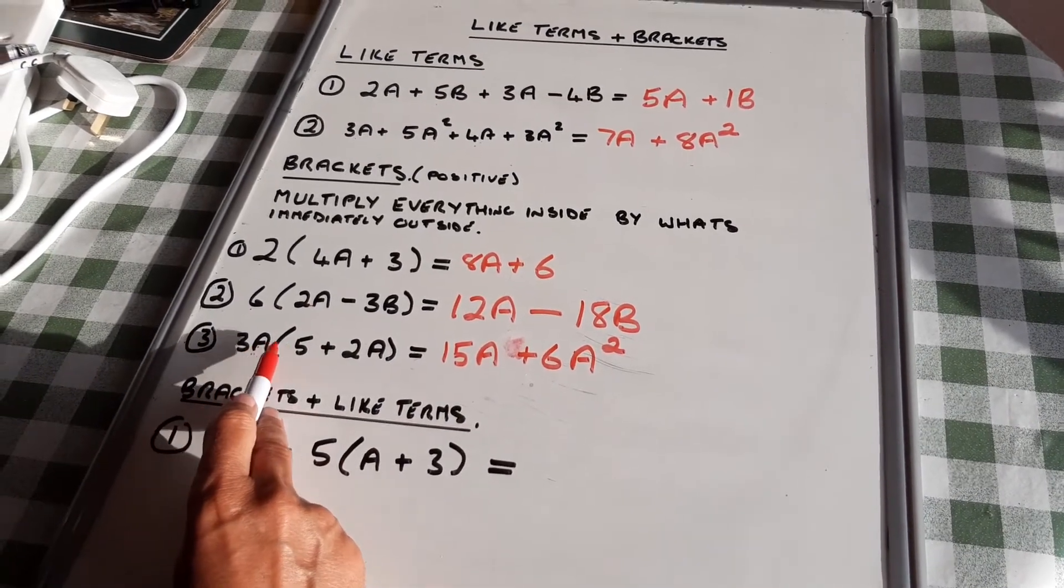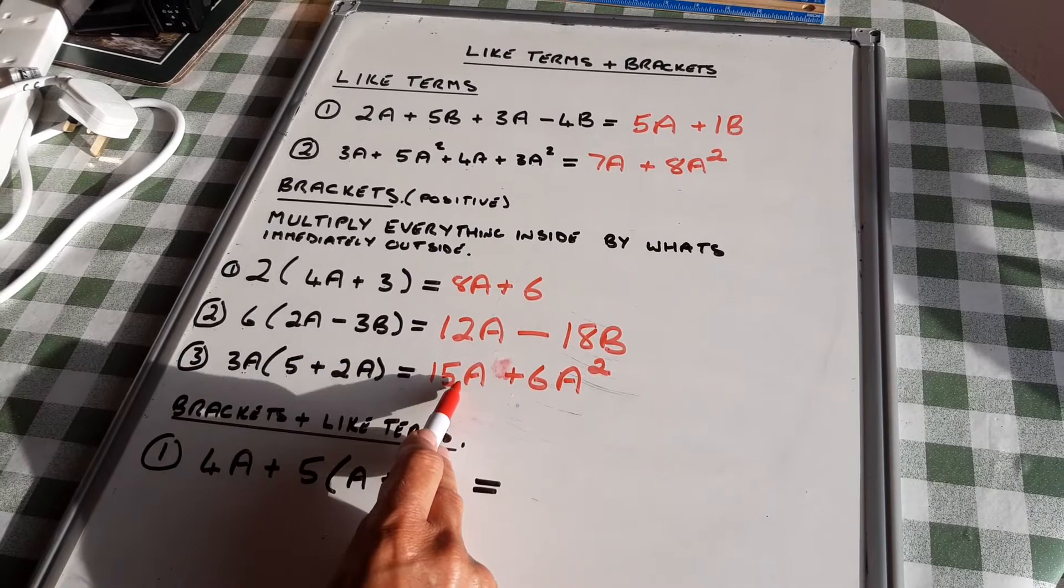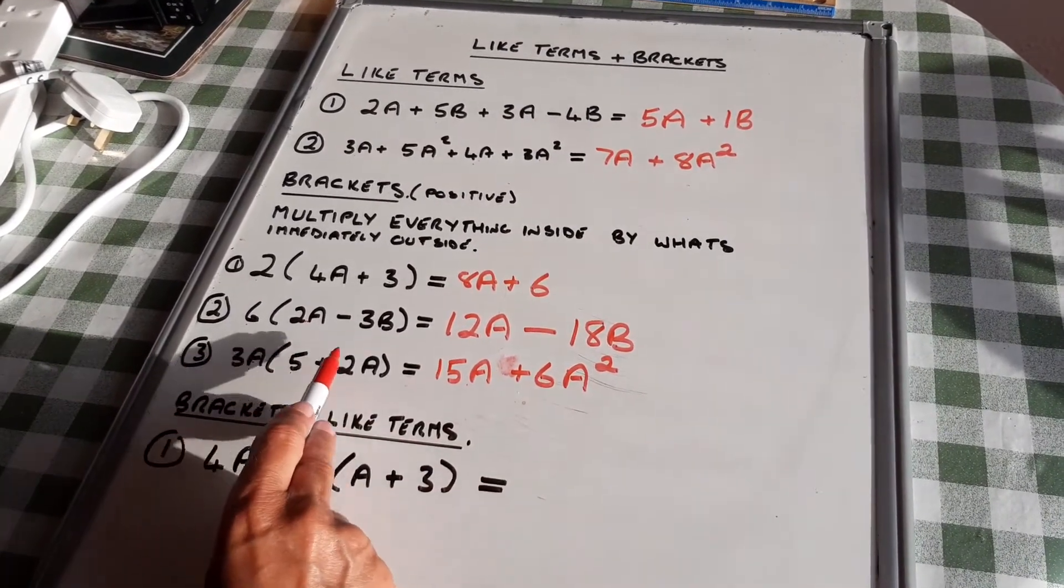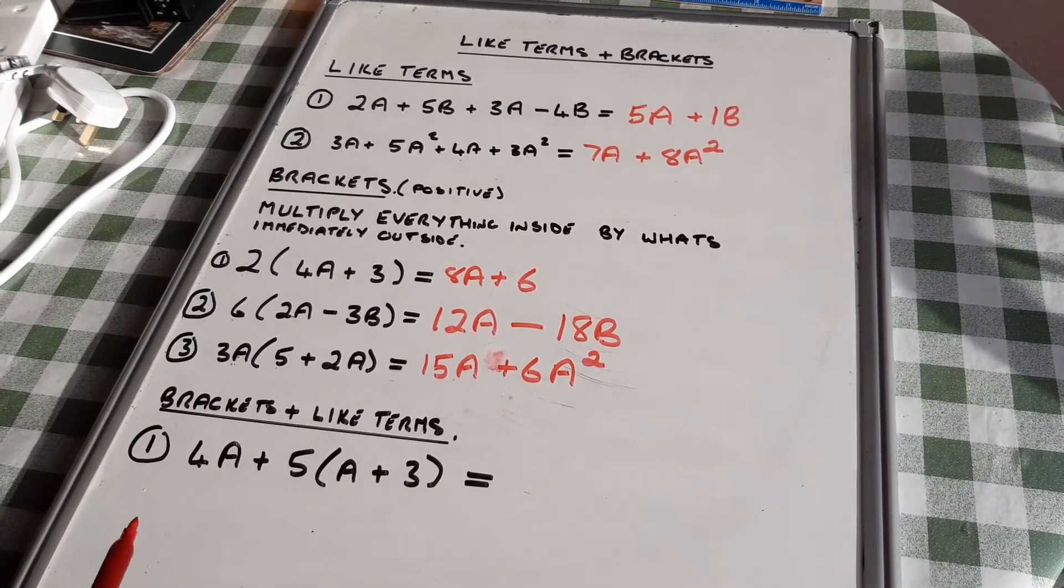Check. 3a times 5 is 15a. 3 times 2 is 6, a times a is a squared.